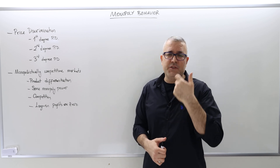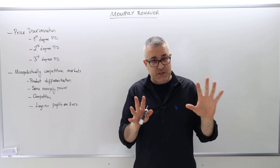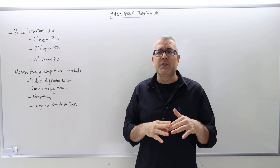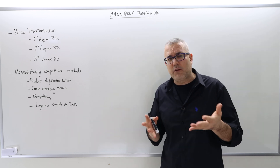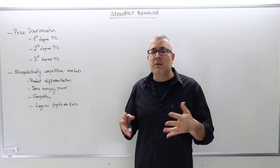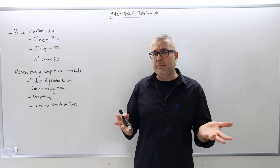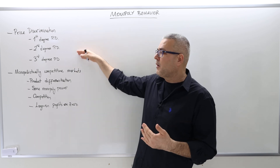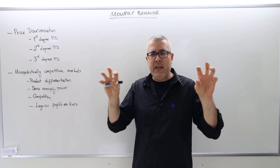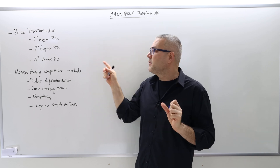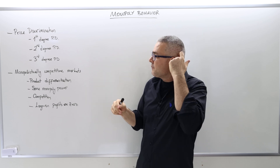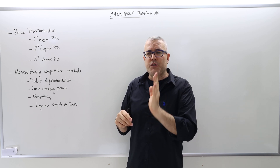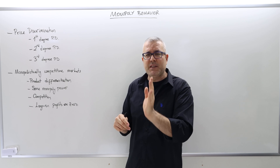In this chapter, we're going to relax the standard monopoly assumption of uniform pricing and see what happens if the monopolist charges different prices to different customers. There are three main price discrimination methods: first degree, second degree, and third degree. In first-degree price discrimination, the monopolist charges different prices to different customers, so every customer pays a different amount.